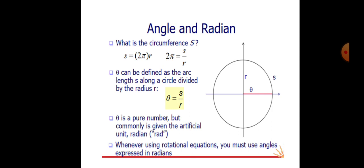The circumference s is equal to 2·pi·r, so 2·pi equals s divided by r. Theta can be defined as the arc length s along a circle divided by the circle radius r: theta = s/r. Theta is a pure number but is commonly given the artificial unit of radians. Whenever using rotational equations, you must use angles expressed in radians.